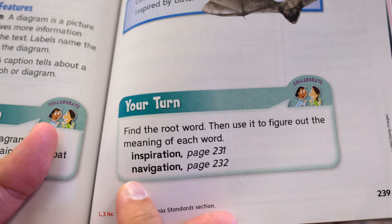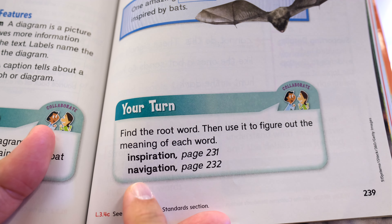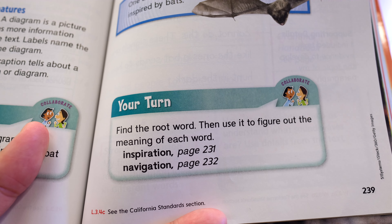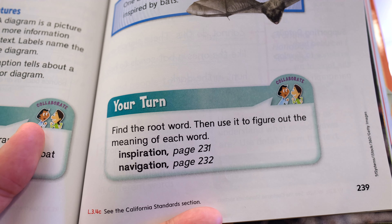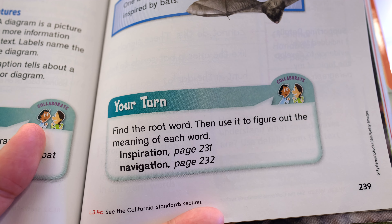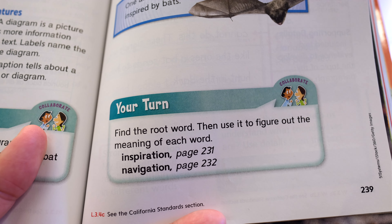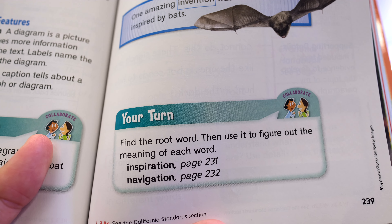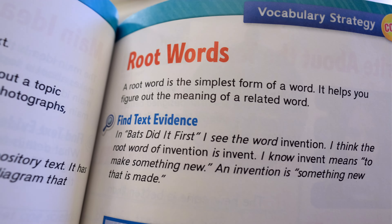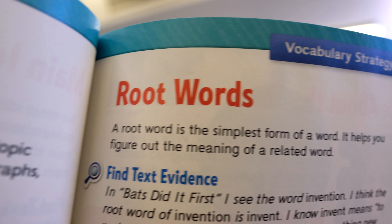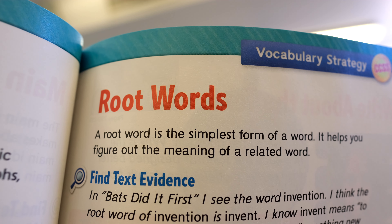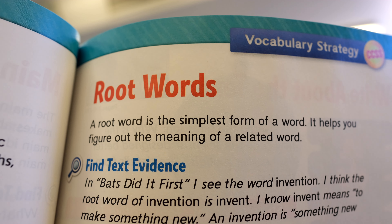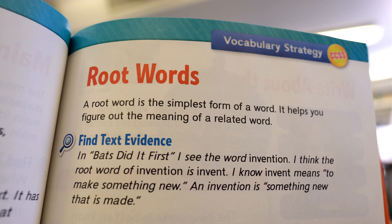The second word is navigation. You might see the word navigate. Navigate means finding your way somewhere. So navigation means to find your way somewhere, or something that helps you find your way somewhere. I hope you're able to find root words in words so you can figure out what they mean — it's really useful and will help you in your reading.